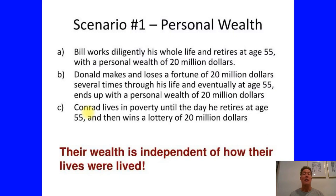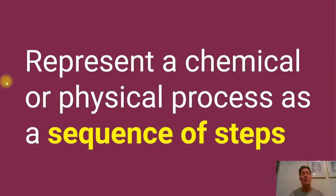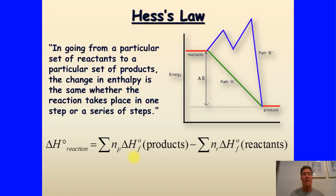Now Hess's Law. Imagine three people who live their lives differently but all end up with $20 million at age 55. It doesn't matter what they did in between — only the final result matters. Hess's Law says the same thing: we don't care how many steps a chemical or physical process takes; we only care about where it finally ended up. In going from a particular set of reactants to a particular set of products, the total energy difference is the same regardless of whether it occurred in one step or multiple steps.